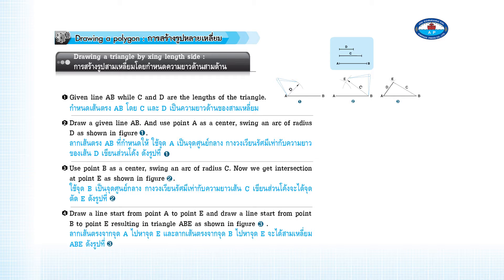Drawing a Polygon: Drawing a triangle by fixing length side. Given line AB, while C and D are the lengths of the triangle.